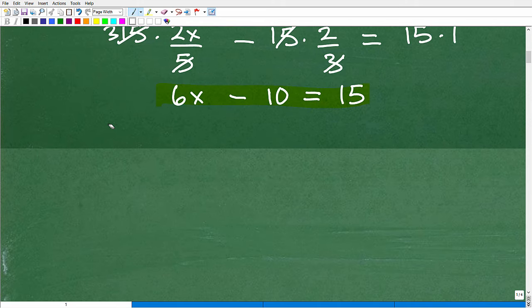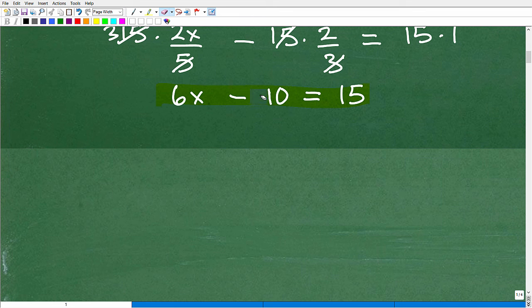And now, we simply can go ahead and solve for x here. So, I'm going to divide. I'm sorry. Add 10 to both sides of the equation and just finish this guy up. So, this is going to be 6x is equal to 25. And then, I'm going to go ahead and divide both sides of the equation by 6.